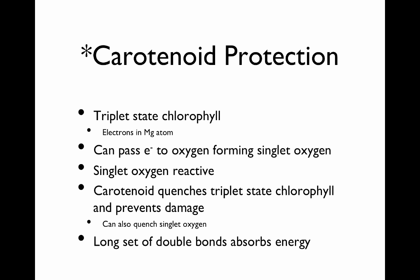Carotenoids can quench the triplet state of chlorophyll. When chlorophylls are exposed to light, sometimes the electrons get overly excited and jump into orbitals, creating this triplet state of chlorophyll. This is extremely reactive and can pass an electron off to oxygen, forming singlet oxygen — which is very damaging to the cell. It will damage DNA, damage proteins, et cetera. The cell wants to avoid that.